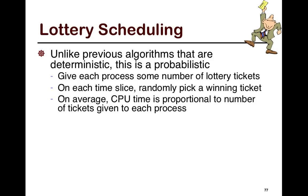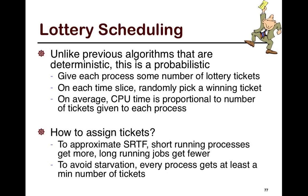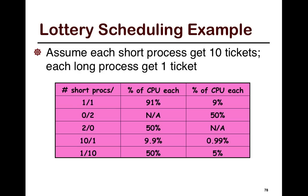Finally, an algorithm that is probabilistic is lottery-based scheduling. You give each process some number of lottery tickets; on each time slice you randomly pick a winning ticket. On average, the CPU time a process gets is proportional to the number of tickets it holds. To approximate shortest remaining time first, short-running jobs get more tickets. To avoid starvation, every process gets at least a minimum number of tickets, so long-running jobs still have some tickets and can potentially get picked.